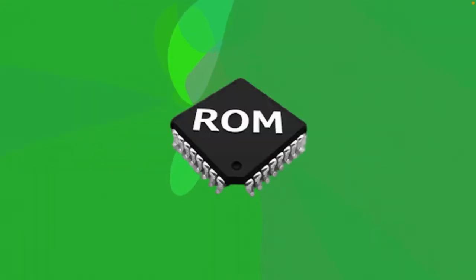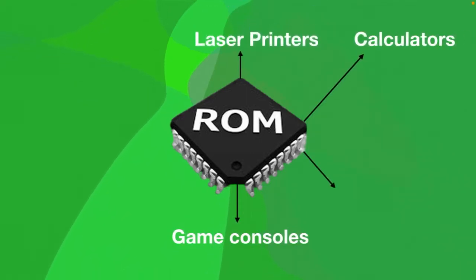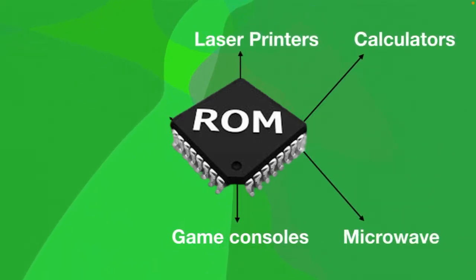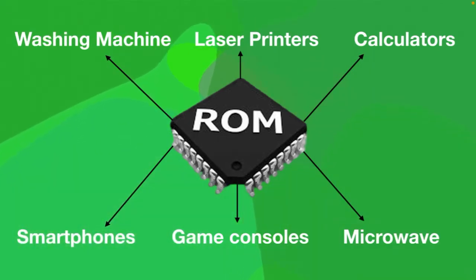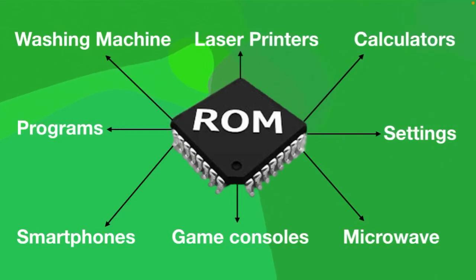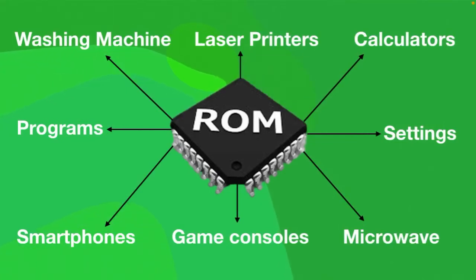ROM is not only used in computer motherboards — it is also used in video game consoles, calculators, laser printers, microwave ovens, washing machines, smartphones, and so on. Manufacturers store the program into the ROM at the time of manufacturing. After this, the content of the ROM cannot be altered, which means you cannot reprogram, rewrite, or erase its content.